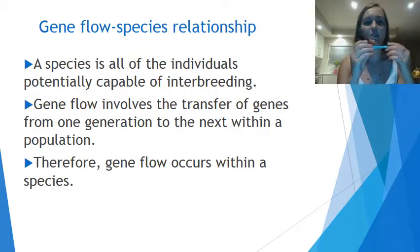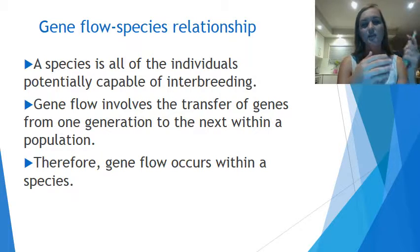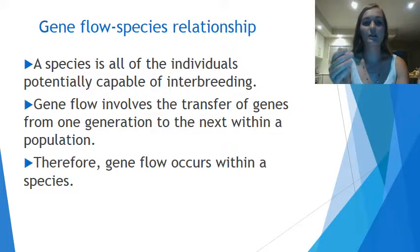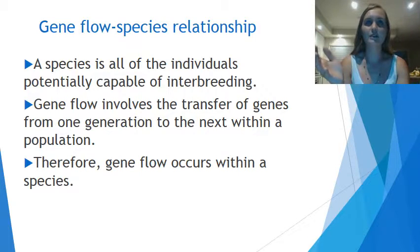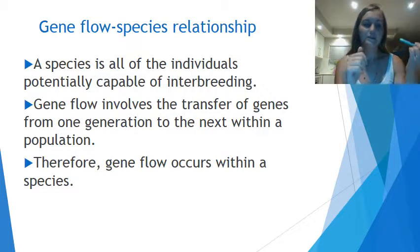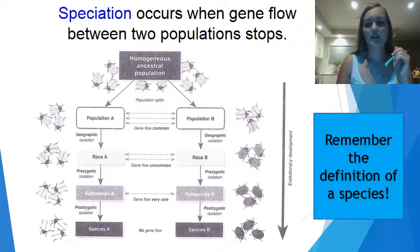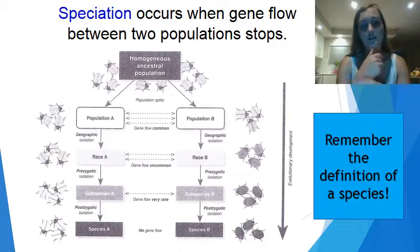We know that a species is capable of all individuals interbreeding — that's how we define a species. Gene flow essentially involves the transfer of genes from one generation to the next within a population, so it's just genes flowing through breeding. Gene flow occurs within a species, and speciation occurs when gene flow between two populations stops.